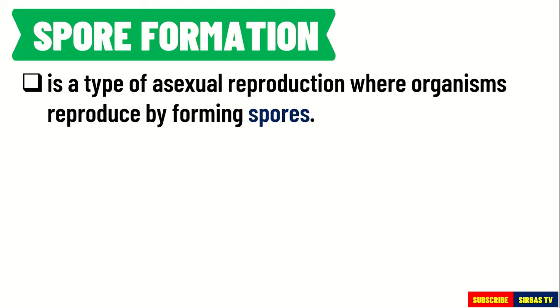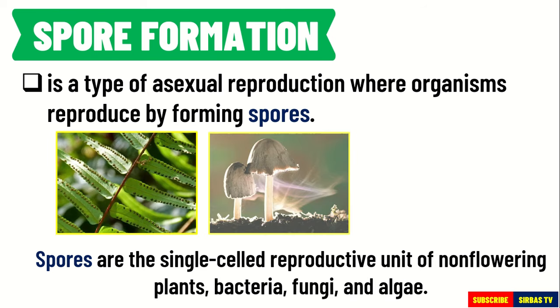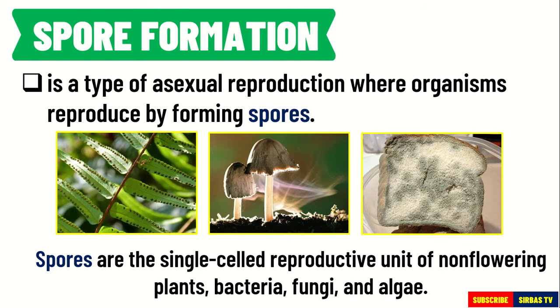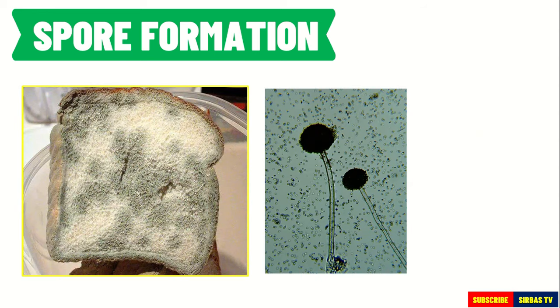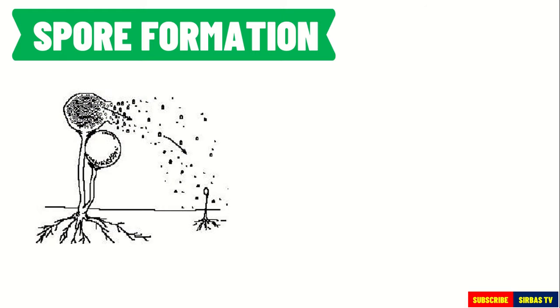Let us first talk about spore formation. Spore formation is a type of asexual reproduction where organisms reproduce by forming spores. Spores are the single-celled reproductive unit of non-flowering plants, bacteria, fungi, and algae. Take a look at this bread mold under the microscope. The black round structure at the tip of a stalk is called a spore case, which contains the spores. When the spore case opens, the tiny spores are released and may be carried by wind or water. Once the spore lands in a favorable environment, it develops into a new organism.